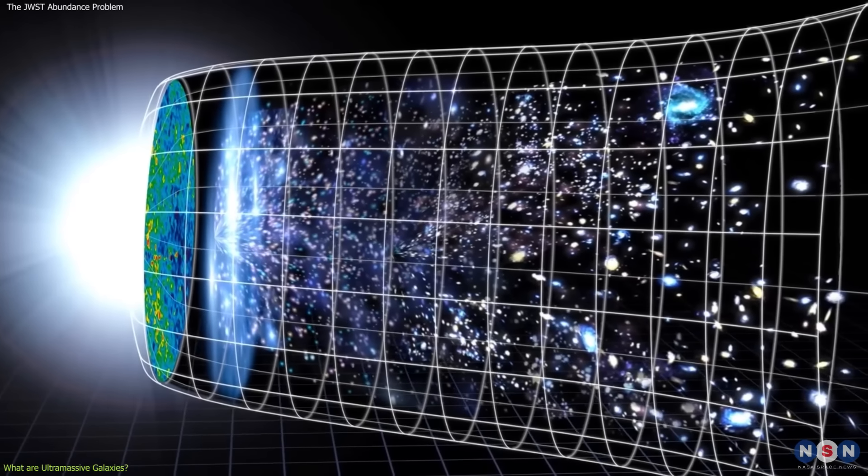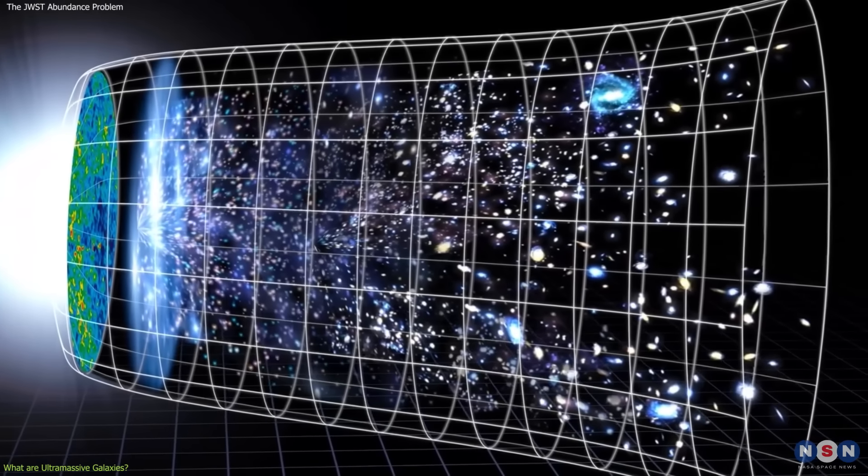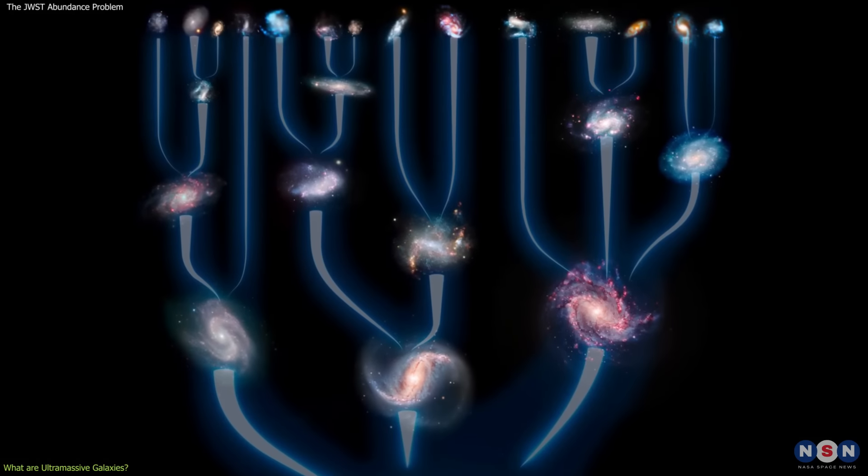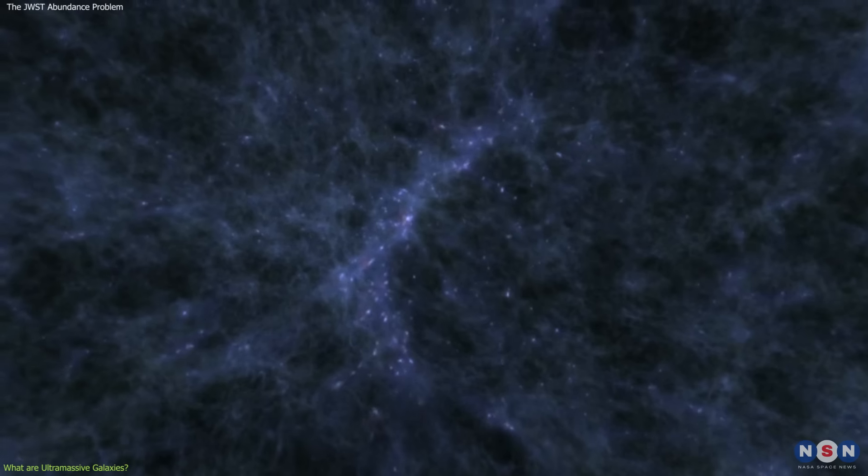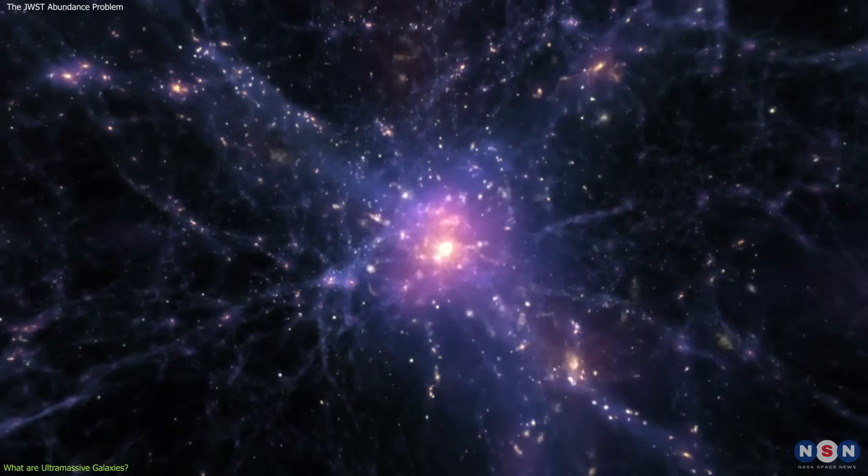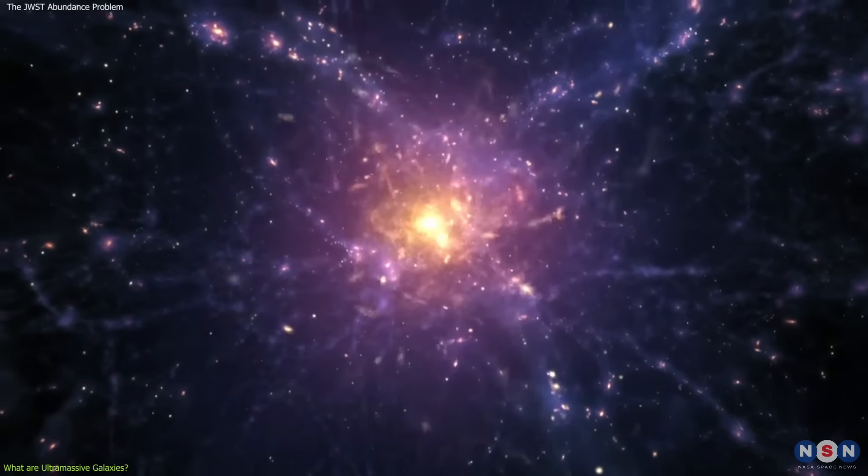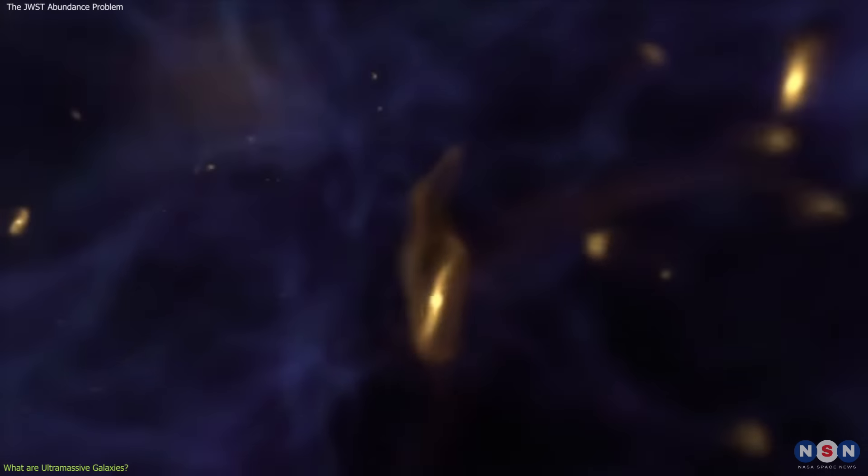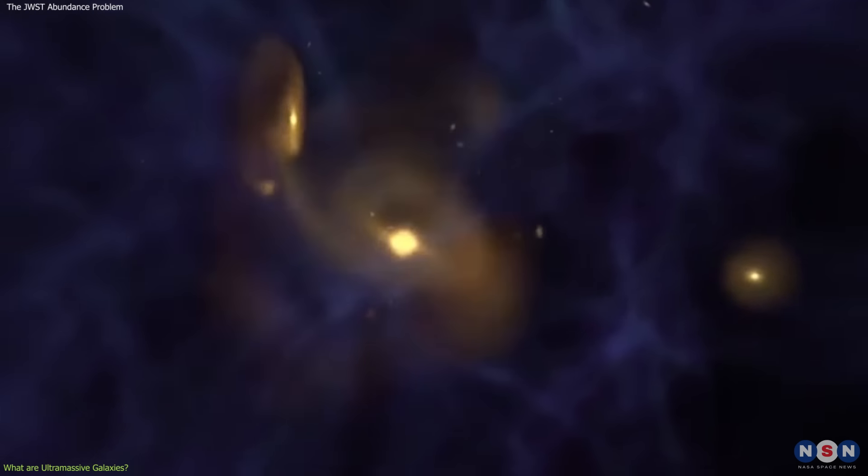This model also predicts that the structures in the universe form hierarchically, from small to large. This means that the first stars and galaxies form from tiny fluctuations in the density of matter in the early universe, and then they merge and grow into larger and more complex structures over time.